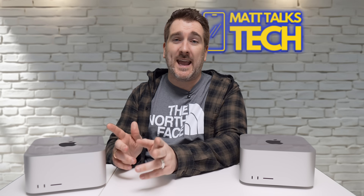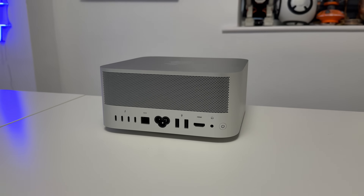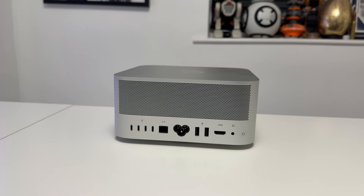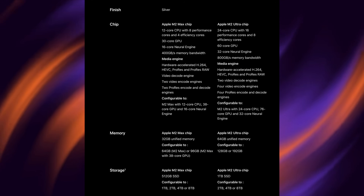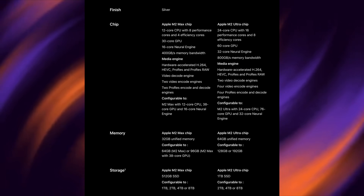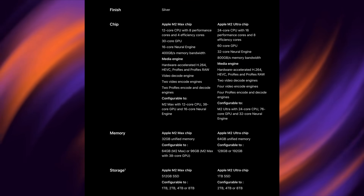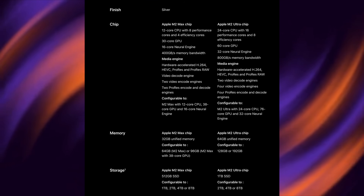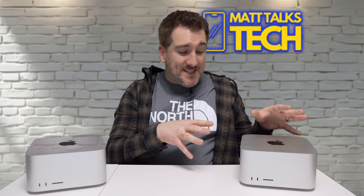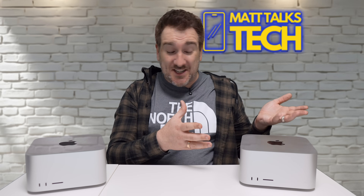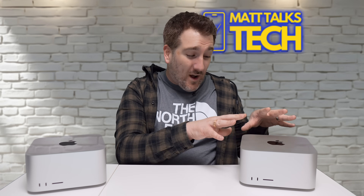Let's go over the major differences between both of these models. My M2 Ultra Mac Studio — my old faithful, bought back in 2022 — has a 24-core CPU and a 76-core GPU. I bought the baseline version, so I have 64 gigabytes of RAM and the one terabyte drive inside it.